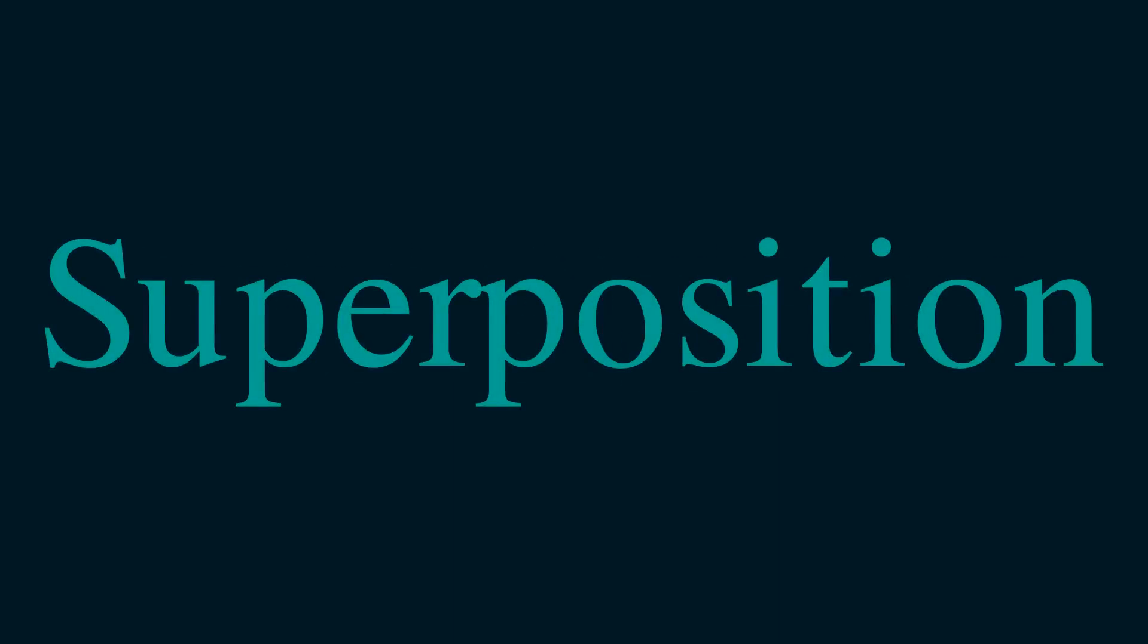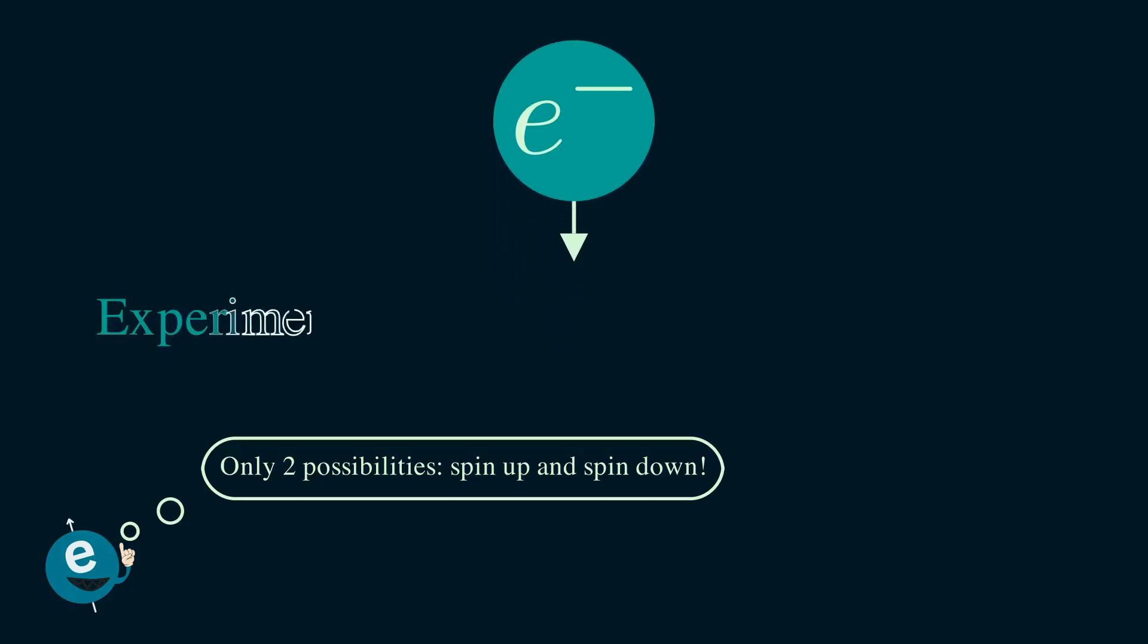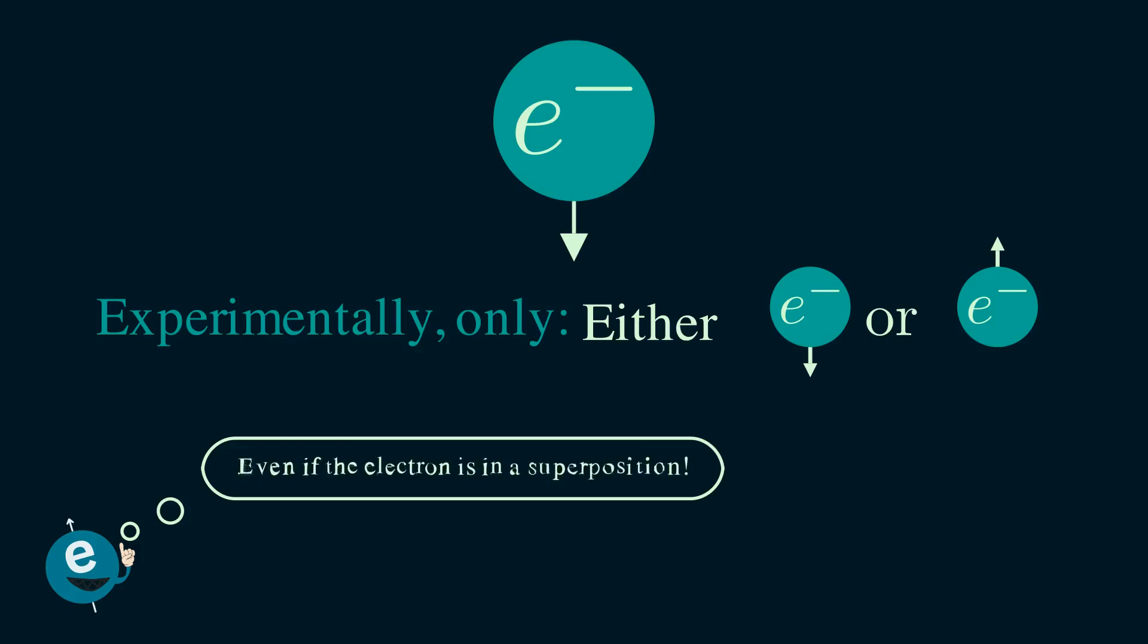Now you may ask, what does a superposition actually look like in the real world? Well, we don't really see superpositions directly. When we observe a quantum system, say we measure the spin of an electron, we always find one result even though the electron is in a superposition of states.